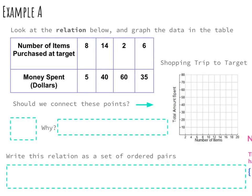Now let's take a look at Example A. It says to look at the relation below and graph the data from this table — it shows someone shopping at Target with number of items purchased and money in dollars spent. We've got the number of items along our x-axis and total amount of money spent on our y-axis. Let's plot our points: 8 items for $5, 14 items for $40, 2 items for $60, and 6 items for $35.